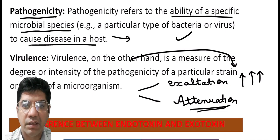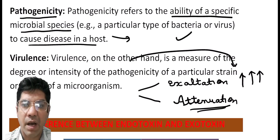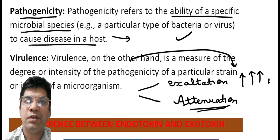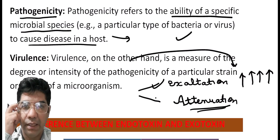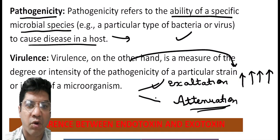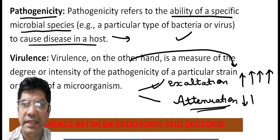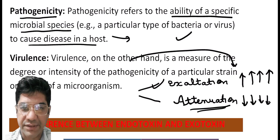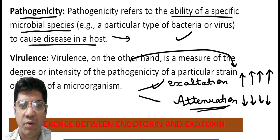Exaltation often involves acquisition of new genetic elements or mutations that enhance the microorganism's ability to cause disease. Viral exaltation is the measure of increase in virulence — the process by which the virulence of a microbial strain increases. Attenuation is the decrease in virulence — it is the process of reducing the virulence of a microbial strain.